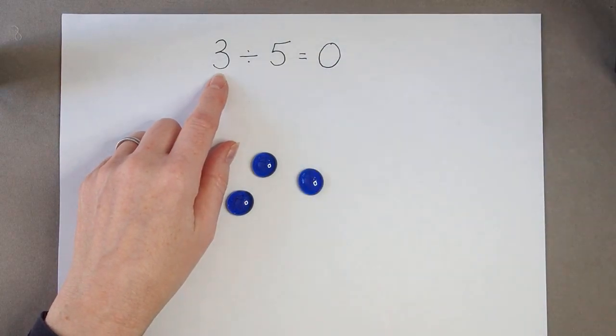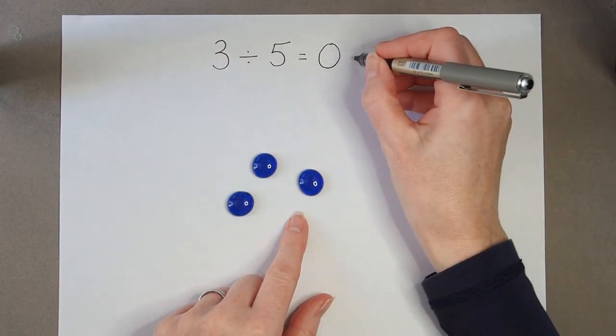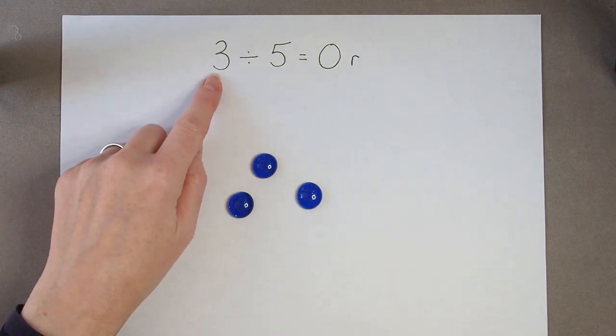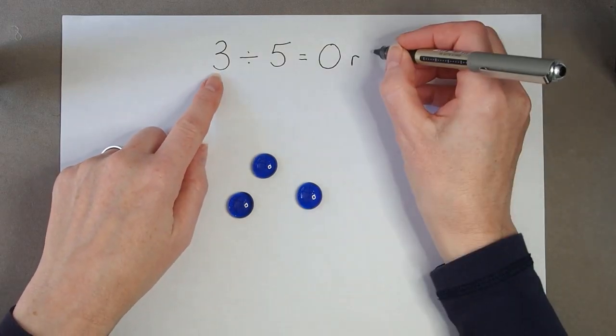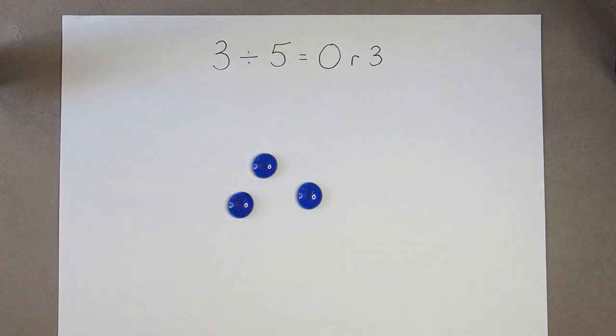So my answer is going to be 0, but I have got some left over. I have a remainder. My remainder, because I haven't used any of those 3, is 3. So 3 divided by 5 is 0. I could make 0 groups and I still had all 3 of them left.